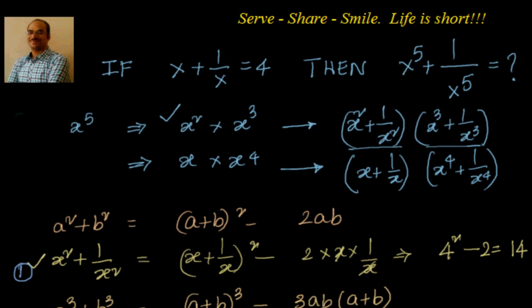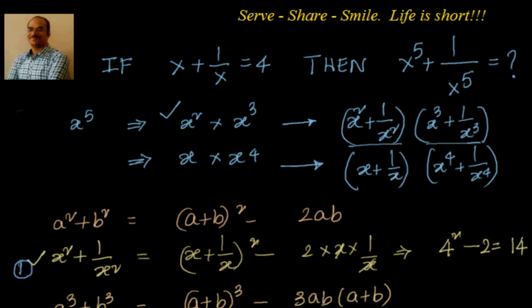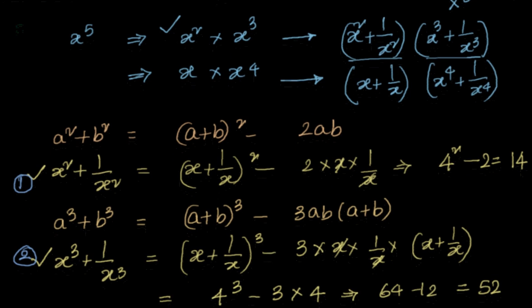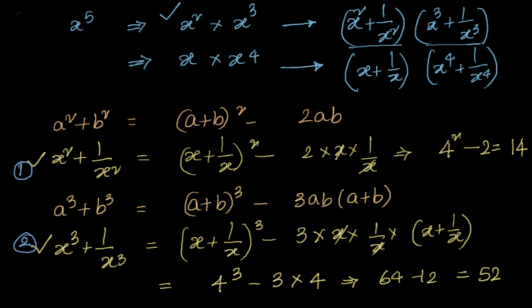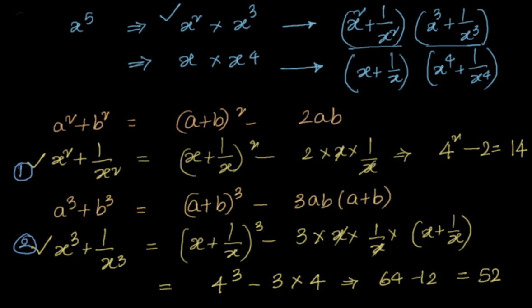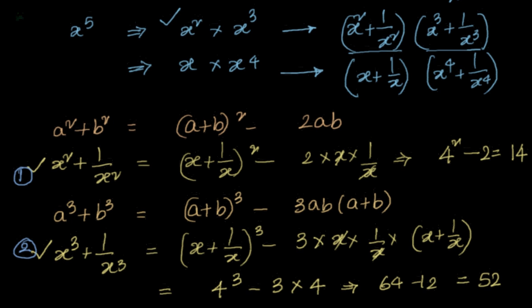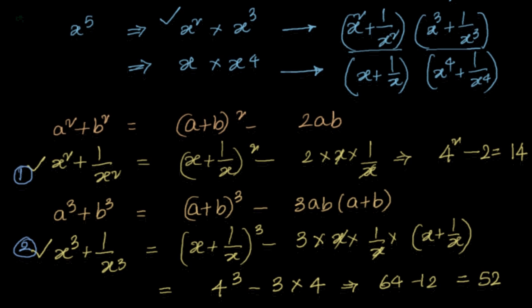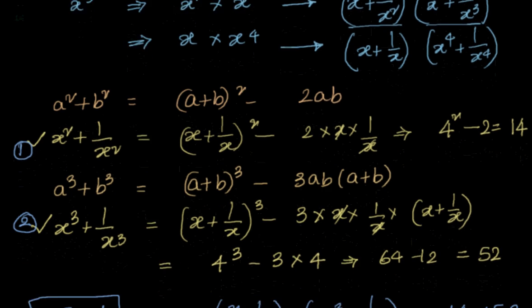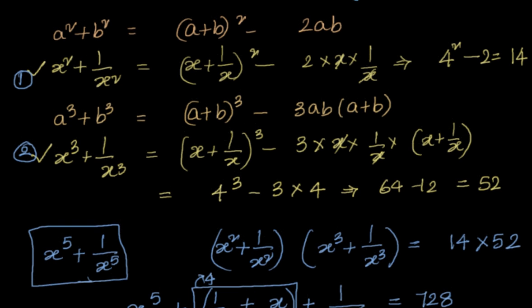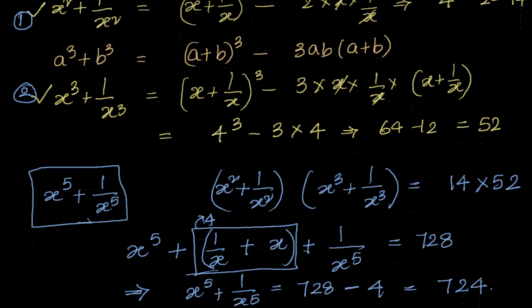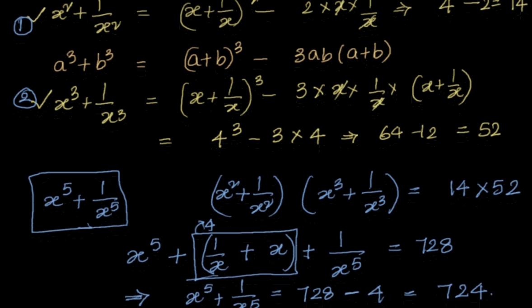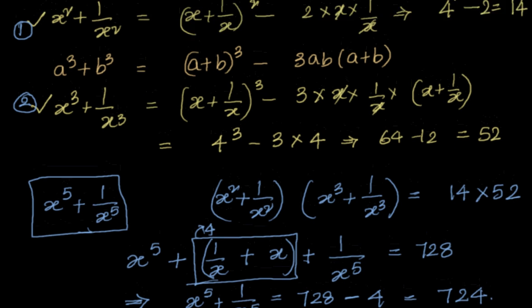Let's summarize. We have been given x plus 1 by x equal to 4. We have to find x power 5 plus 1 by x power 5. We know x power 5 can be obtained by adding 2 and 3 or adding 1 and 4. We picked the first option. x square plus 1 by x square and x cube plus 1 by x cube can be found using algebraic formulas. Then we multiply them, equate it to 728, we simplify and we get our answer as 724.